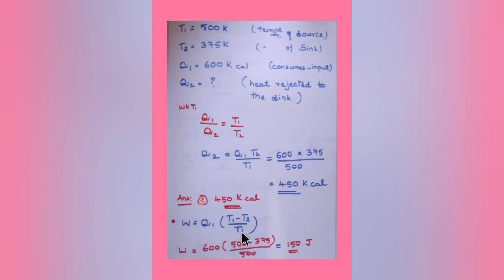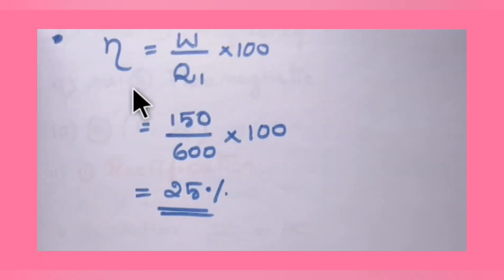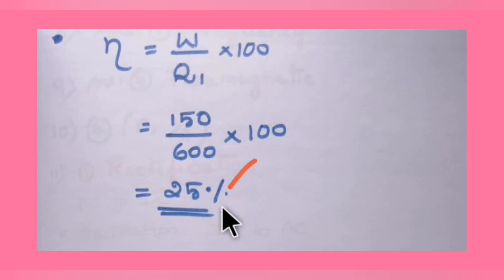If Q1 and T1, T2 are given but Q2 is not, use the formula W = Q1 × (T1−T2)/T1 to find the work done, say 150 joules. Then use η = (W/Q1) × 100 substituting both values to get the efficiency of the given Carnot engine.